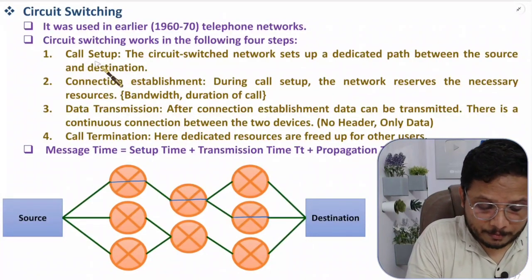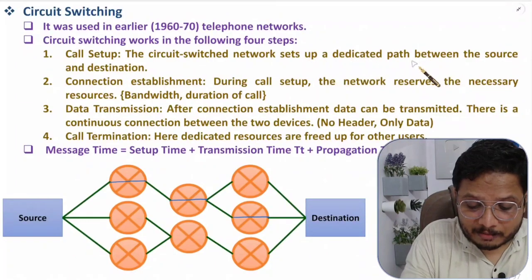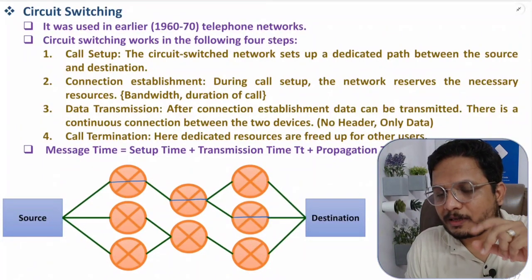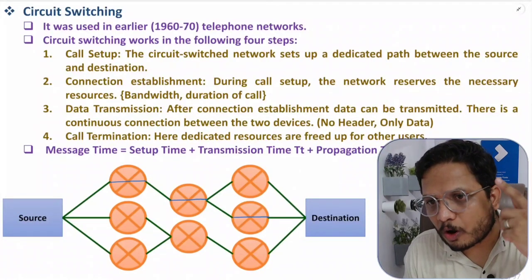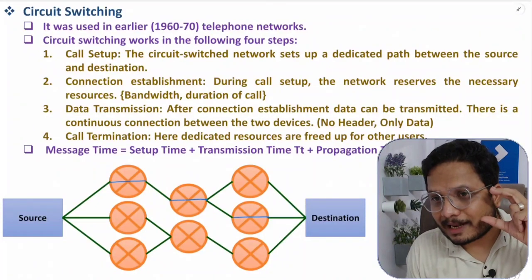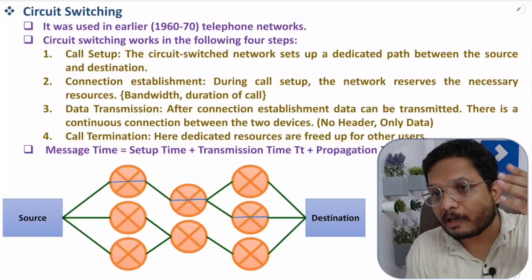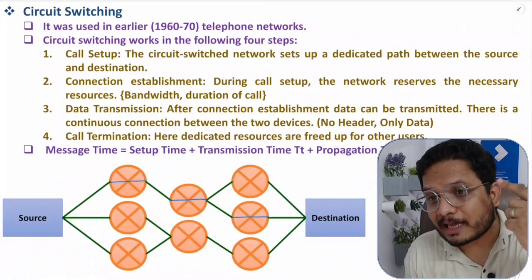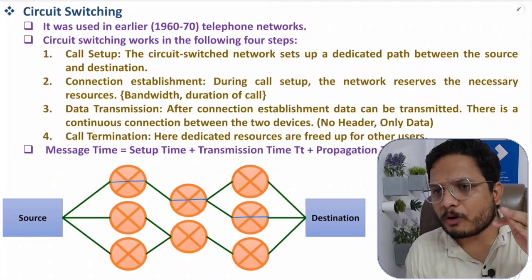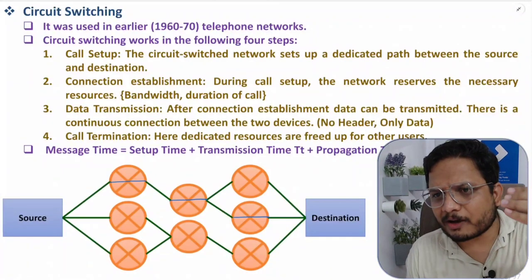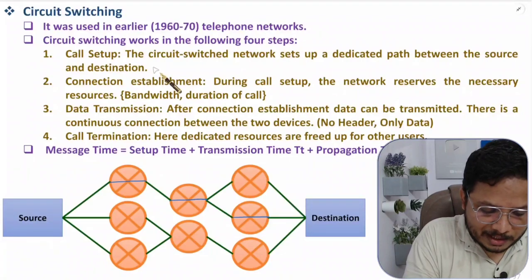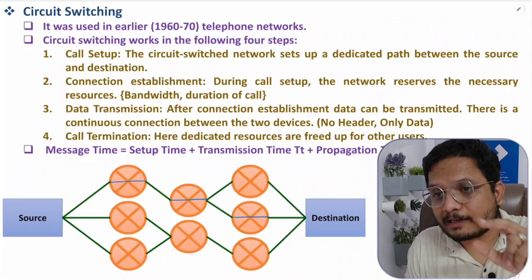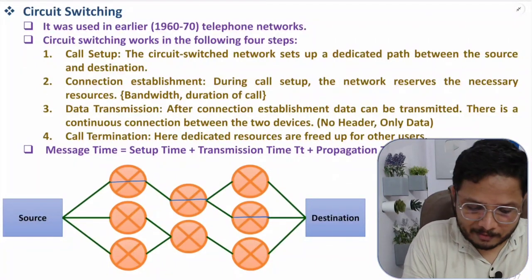The first step is call setup. The circuit-switched network sets up a dedicated path between source and destination. The first person requests the network admin, specifying the location and exact address. For the US, there is a dedicated country code; within it, each state has a dedicated code — for example, Surat had the code 0261. Similarly, California has its own dedicated code. This is how the initial call setup happens in a circuit-switched network.